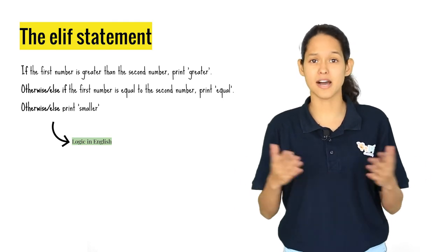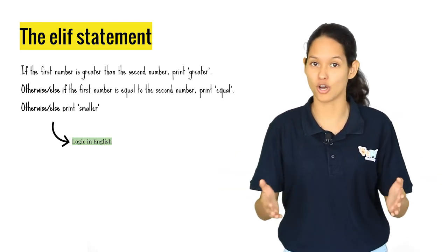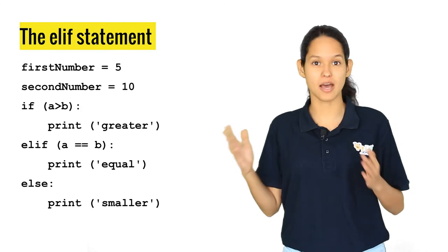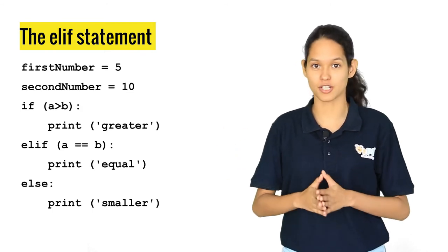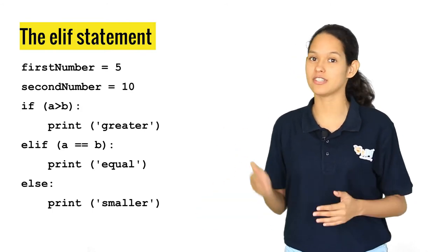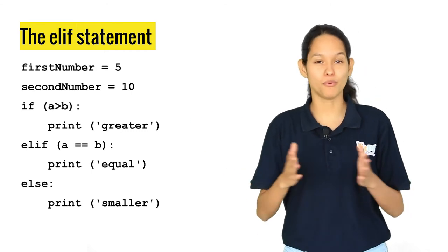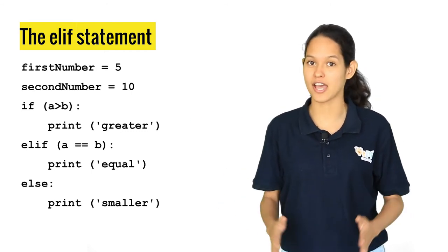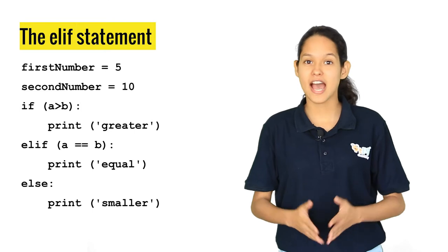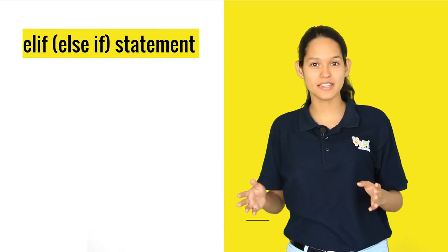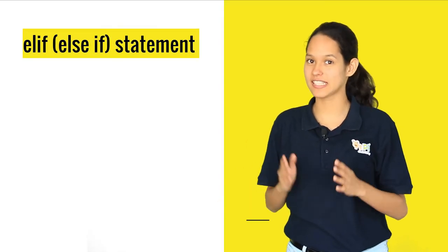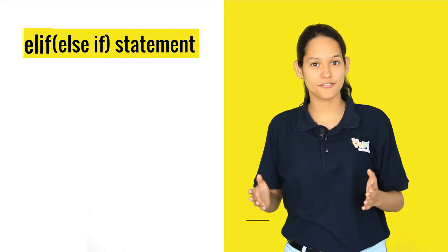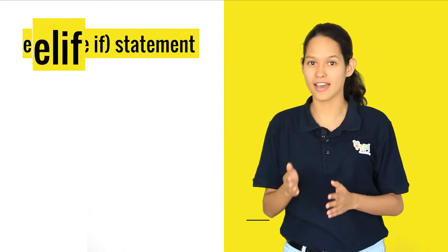You can have multiple else if statements in your program. In this example, it checks if the number is greater in the first condition. In the second, it checks if the number is equal. If both these conditions are not satisfied, it prints smaller as the else statement. In Python, we use elif instead of else if. Elif is spelled as e-l-i-f.